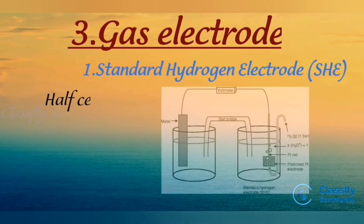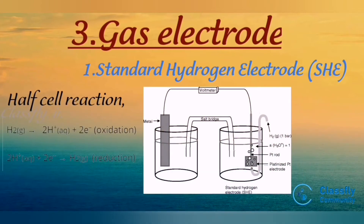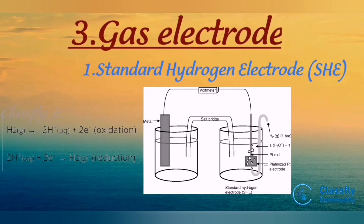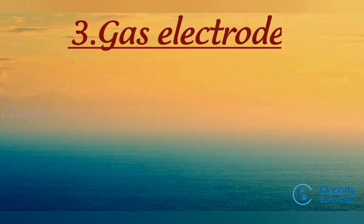The half-cell reactions for the standard hydrogen electrode are: H₂ → 2H⁺ + 2e⁻ (oxidation) and 2H⁺ + 2e⁻ → H₂ (reduction). Hydrogen gas loses electrons to form 2H⁺, meaning oxidation occurs. Hydrogen ions gain two electrons to form hydrogen gas, meaning reduction occurs.